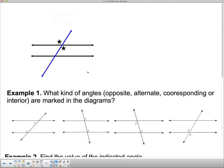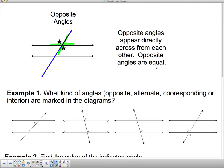This doesn't have to happen with parallel lines. It can happen when any two lines intersect. We have, some people might call this the X pattern. Those are what we call opposite angles. And when two lines cross, opposite angles are equal. Opposite angles appear directly across from each other. Opposite angles are equal.